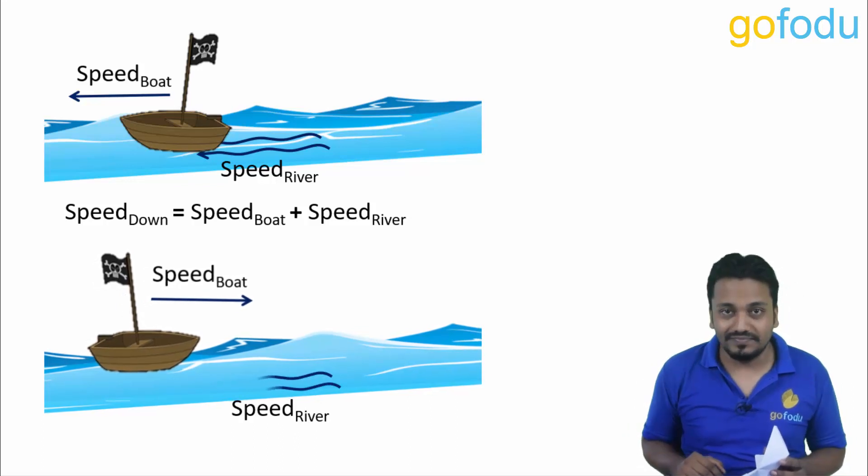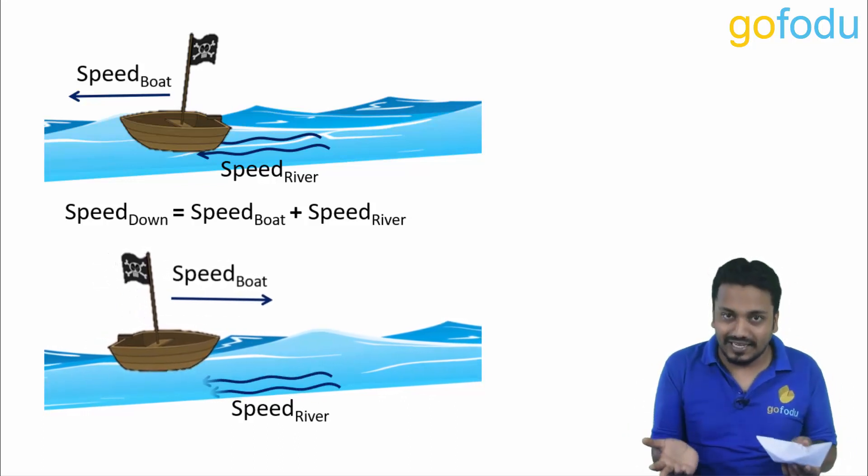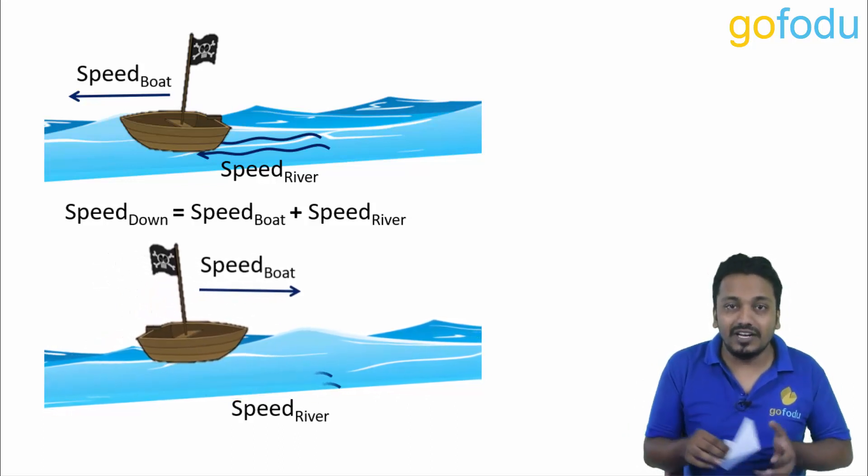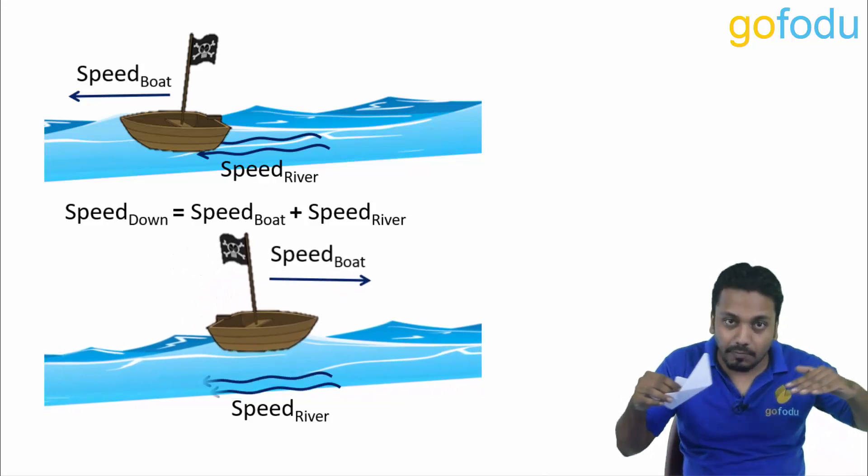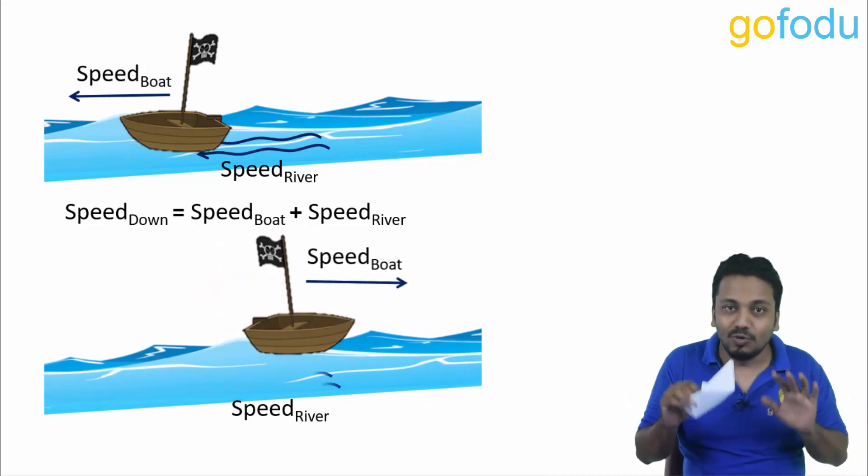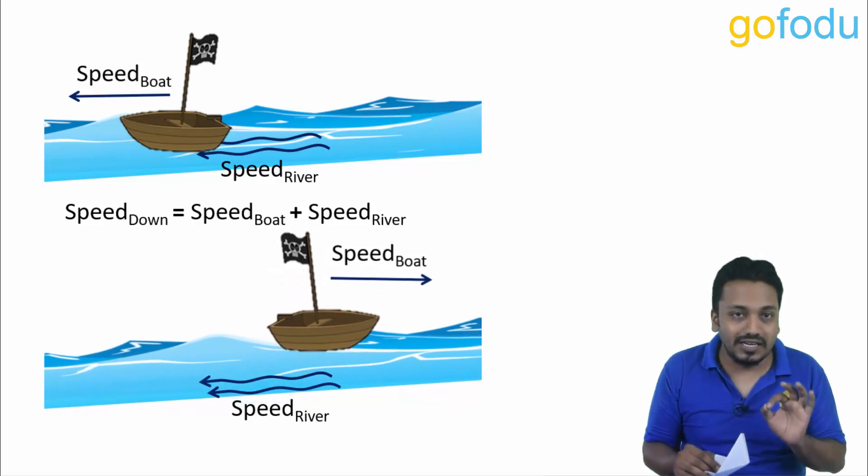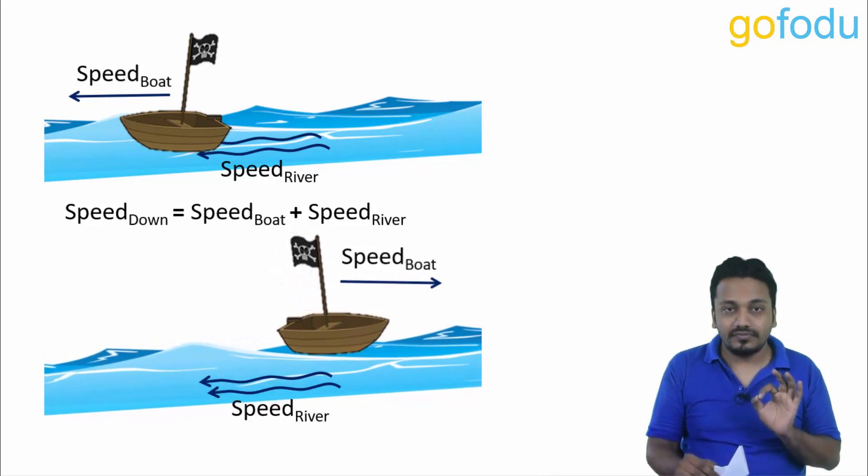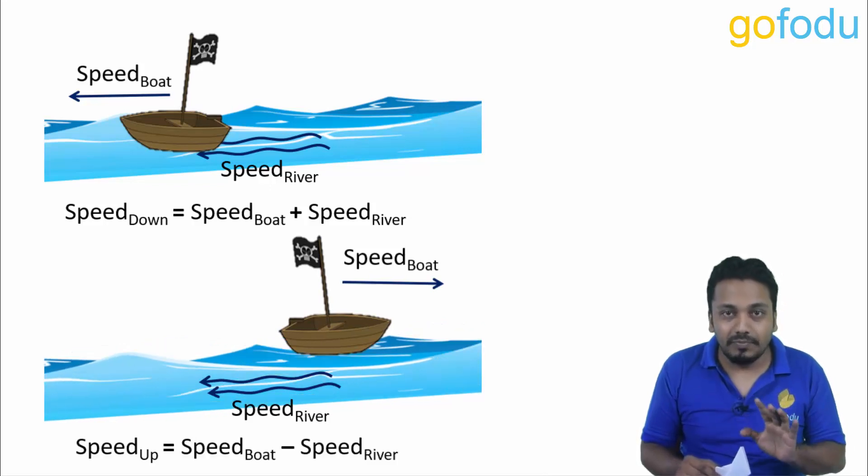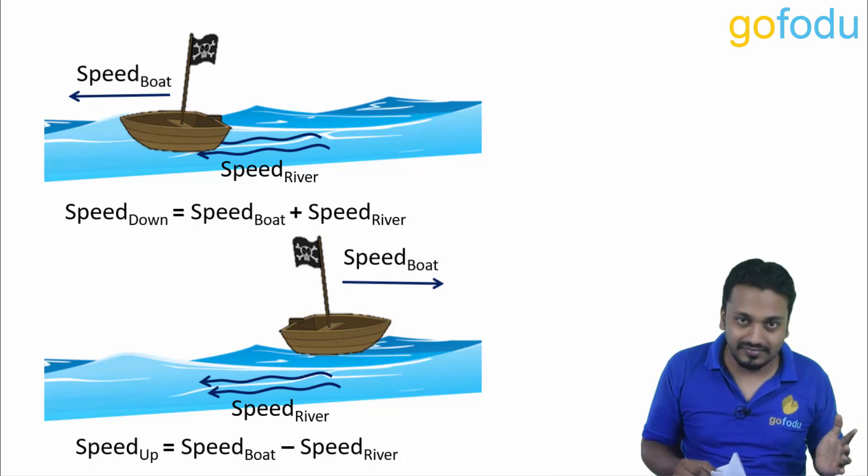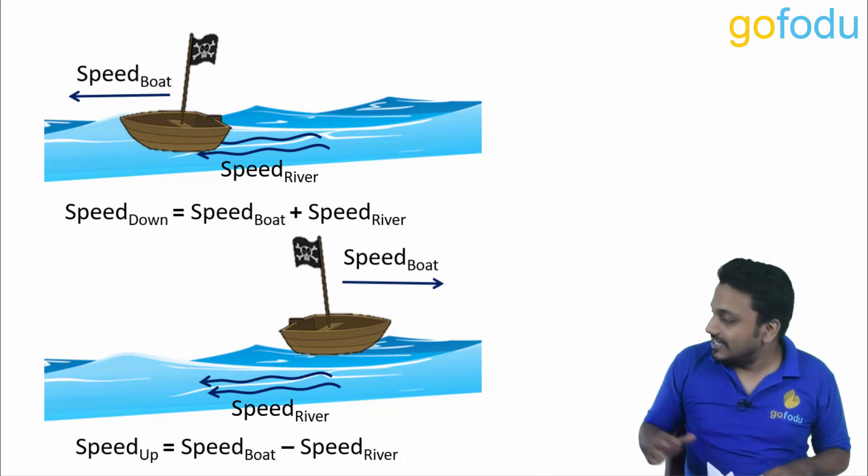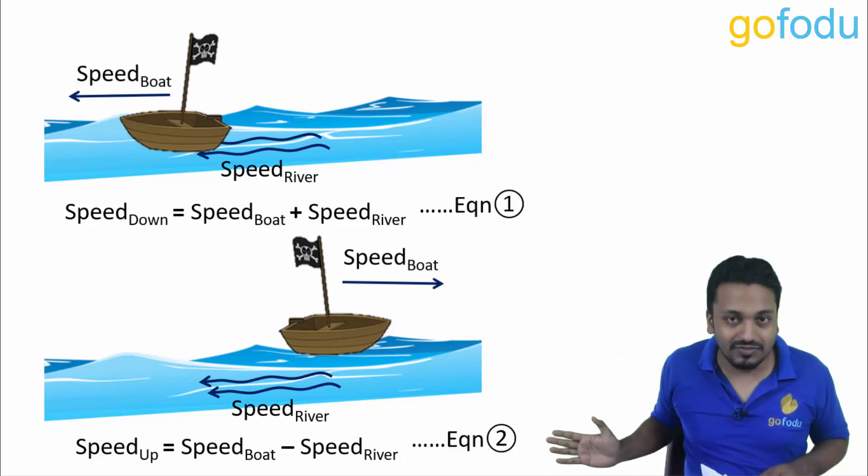In the second case when the boat goes against the flow of river, when the boat is going upstream, the river's speed will counter the boat speed. The speed will oppose the boat speed, so boat's effective speed upstream will decrease and speed of boat upstream will be speed of boat in still water minus speed of river.